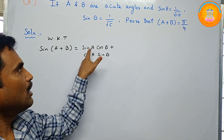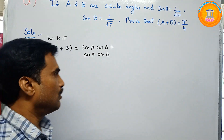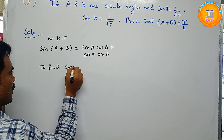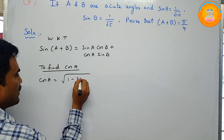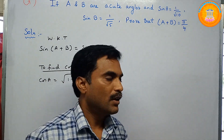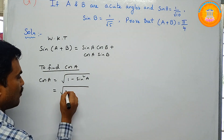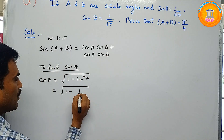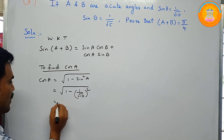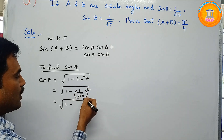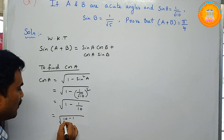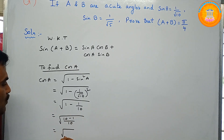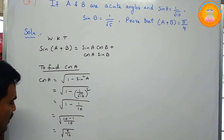To find cos A, we use: cos A = √(1 − sin²A), since sin²A + cos²A = 1. Substituting sin A = 1/√10: cos A = √(1 − (1/√10)²) = √(1 − 1/10) = √(9/10). Applying the square root to numerator and denominator: √9 = 3, so cos A = 3/√10.